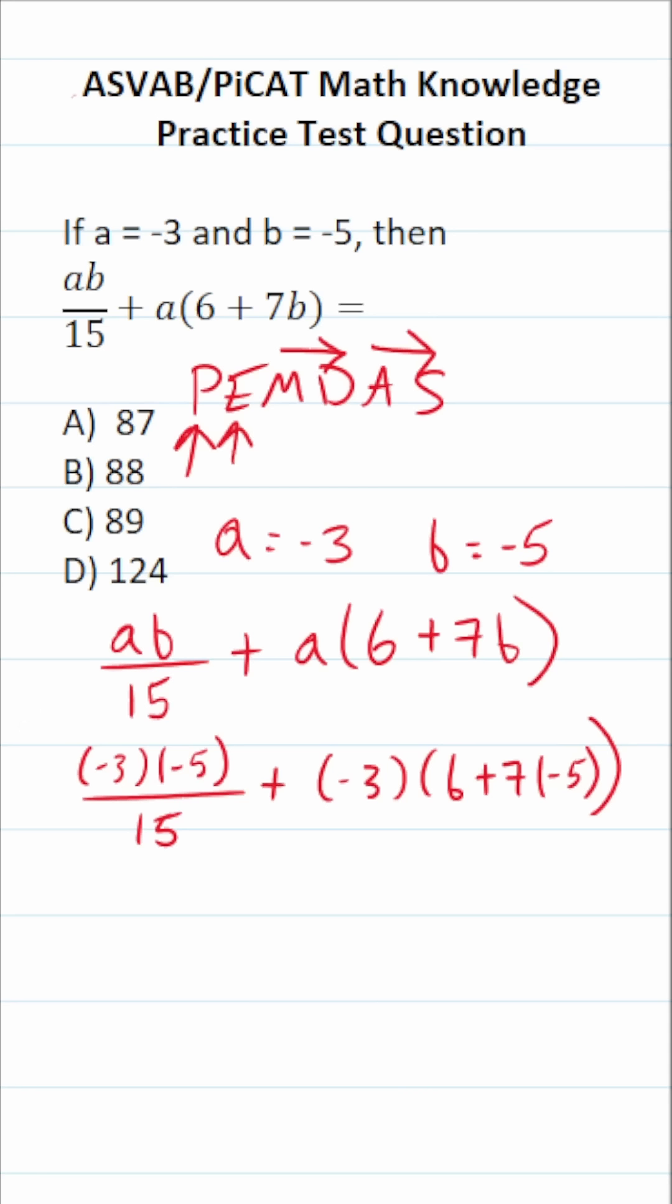I can actually work out this left-hand side and right-hand side separately. Specifically, I can do negative 3 times negative 5. Negative times a negative is going to be a positive. So this is 15 over 15 plus negative 3 times. And this is where we really got to follow the order of operations. We have 6 plus 7 times negative 5.